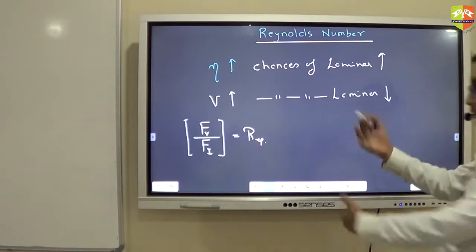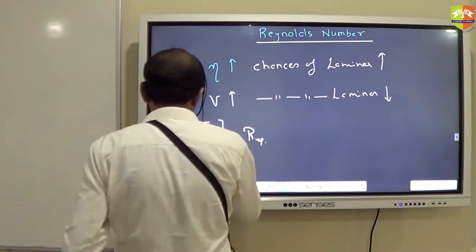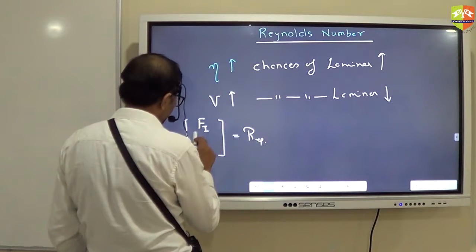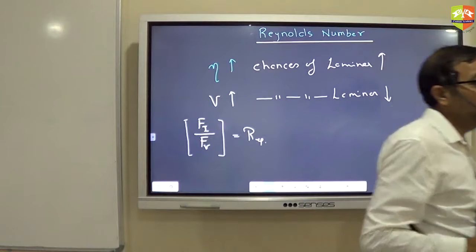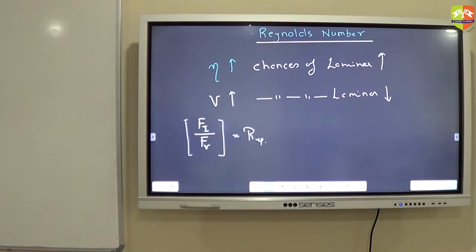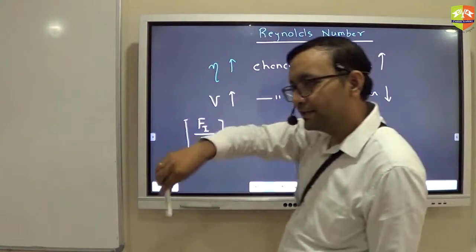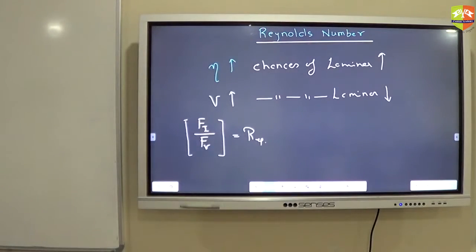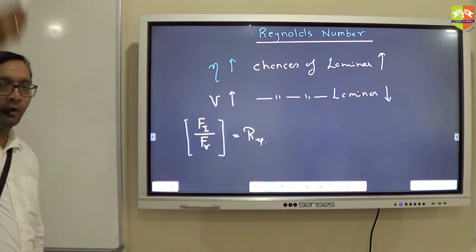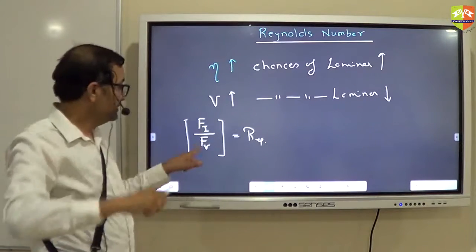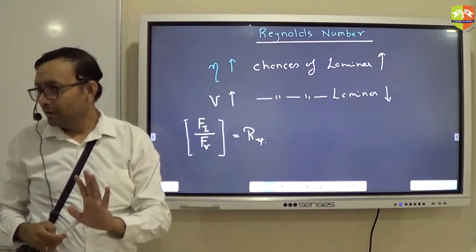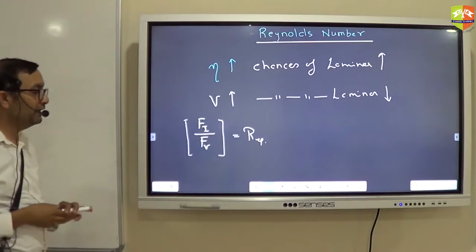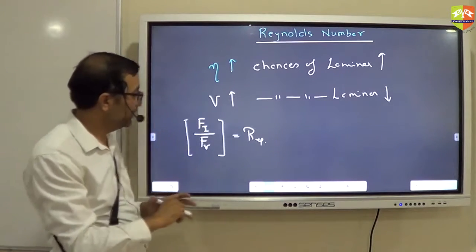And this is my Reynolds number. Sorry, Reynolds number is reciprocal of that—inertial force divided by viscous force. So now tell me, if Reynolds number is less, what does it mean? Viscous force is more or viscosity is more and velocity is less, so laminar flow. And if Reynolds number is more, it means viscous force is less, turbulent flow chances are more.